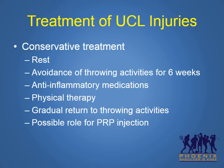Initially, conservative non-operative treatment is recommended for most ulnar collateral ligament injuries. This consists of rest, avoidance of throwing activities for approximately six weeks, anti-inflammatory medications, and formal physical therapy. After six weeks, athletes can attempt to resume throwing activities in a slow gradual fashion by performing a throwing program. Occasionally, PRP injections are recommended for partial injuries of the ulnar collateral ligament.